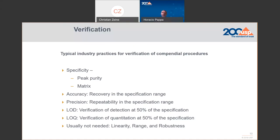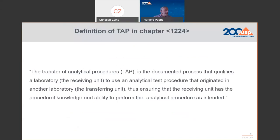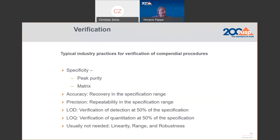You can also determine peak purity using the appropriate HPLC detector. Then we have accuracy and precision—these two, together with specificity, are the main performance characteristics that need to be tested during the verification. We have to demonstrate that the analyte is properly recovered within the range of the specification, and also that the repeatability is appropriate within the range of the specification.